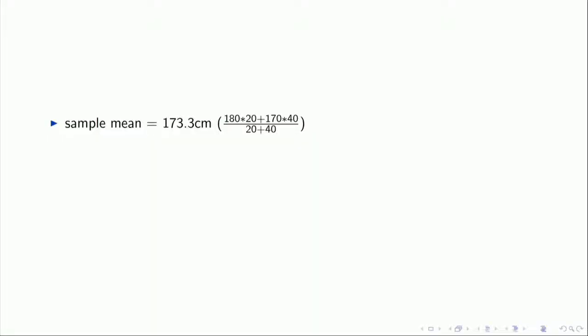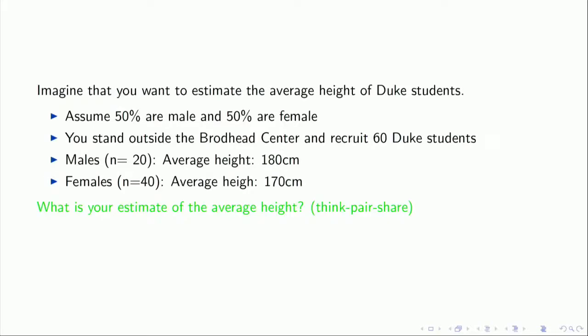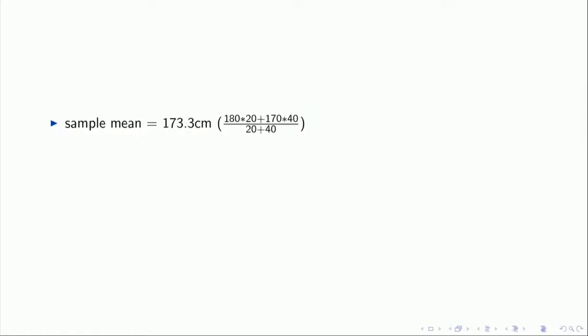We saw two different approaches. One approach is to take the sample mean — basically just take the sample we have and take the average, accounting for the different sizes of each group. Another approach is to use the information we have about the number of men and women to produce a weighted estimate. For people who said 175, you've basically done a form of post-sample adjustment. The unweighted sample mean gives you 173.3, while the weighted estimate gives you 175.